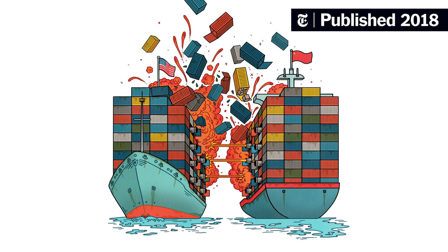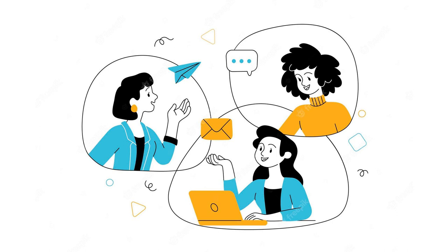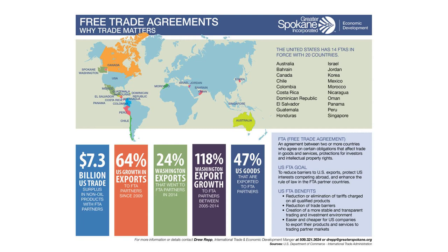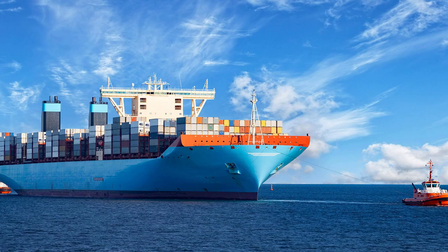The US-Japan trade war also provides valuable lessons for policymakers and economists. It underscores the importance of effective communication, negotiation, and compromise in resolving trade disputes. It highlights the need for transparent and enforceable trade agreements that promote fair competition and protect the interests of all parties involved. Furthermore, the trade war serves as a reminder of the interconnectedness of the global economy — the actions of one country can have far-reaching consequences for others.